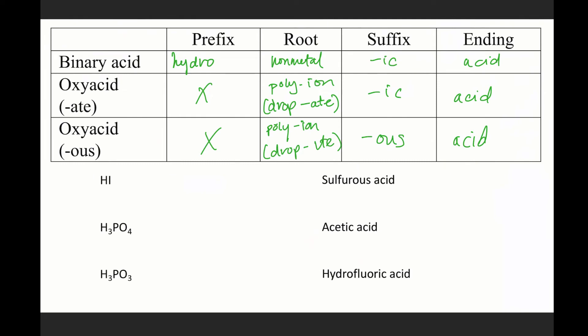All right, so let's do a few practice together. So here we have, oh, starts with an H, probably an acid. Oh, it's only got one other element, means it must be, ding, ding, binary acid. So we will use the hydro prefix, because that goes with binary acids. Then we'll use the iode, which is the root for iodine, and end it with '-ic', and then acid, hydroiodic acid.